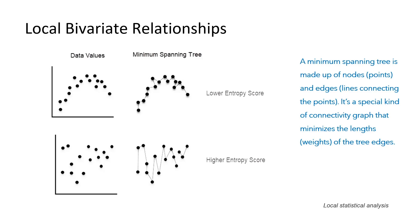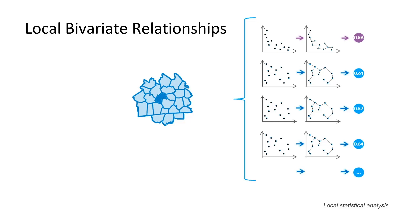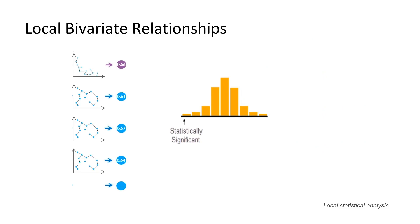The entropy score is related to the sum of the edge lengths — the lines connecting the points. The edges connecting points in a strongly related graph are short; longer edges indicate a weaker relationship. Once the tool gets an entropy score for the observed variable values, it shuffles the x and y values to create up to 999 sets of randomized pairings, then estimates the joint entropy for each. If the original pairings are strongly related, their entropy score will be small, and randomized pairings will almost always produce larger scores. The tool creates a distribution of entropy scores — if the observed score falls in the tail of the distribution, the variables are related and the relationship is statistically significant.